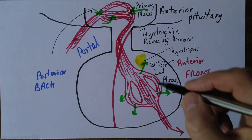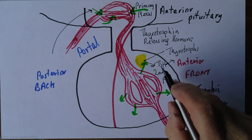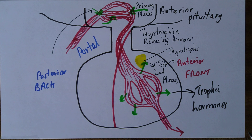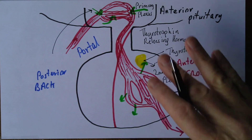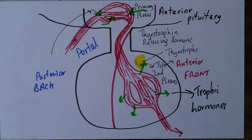To summarise: thyrotrophin releasing hormone travels down, stimulating the specialised thyrotrophs to release thyroid stimulating hormone, which stimulates the thyroid gland. The whole purpose of the system is to maintain very fine homeostatic regulation of the amounts of thyroid hormone in the blood. This exquisite system of feedback, stimulation, and inhibition is how that is maintained — and for most of us, right now, we'll have exactly the right amount of thyroid hormone in our blood, not too much, not too little, because it is exquisitely homeostatically regulated.